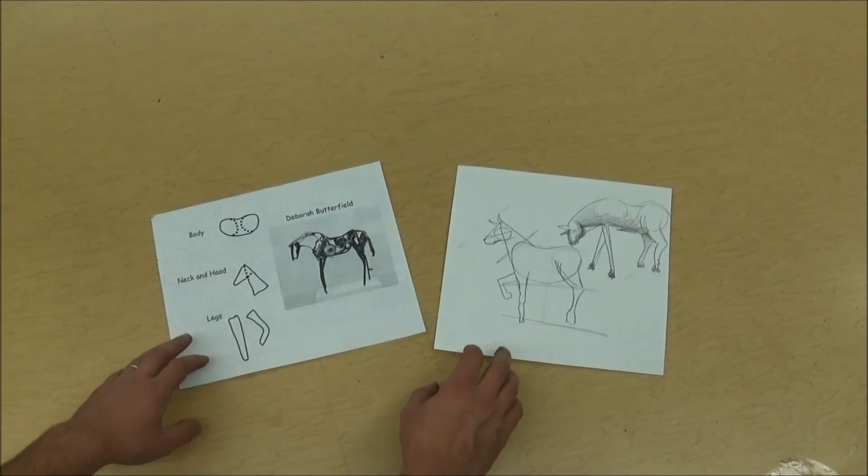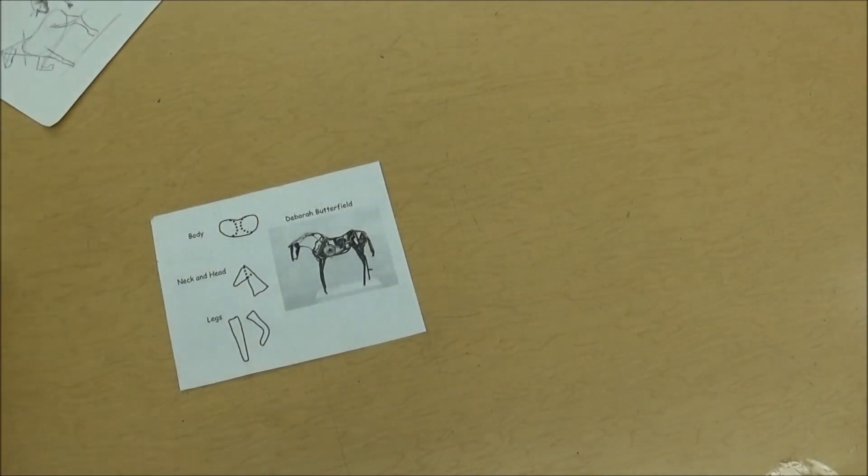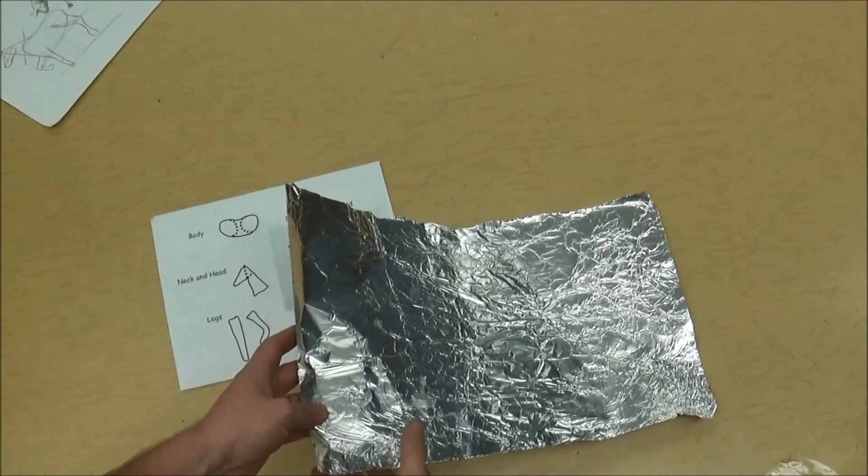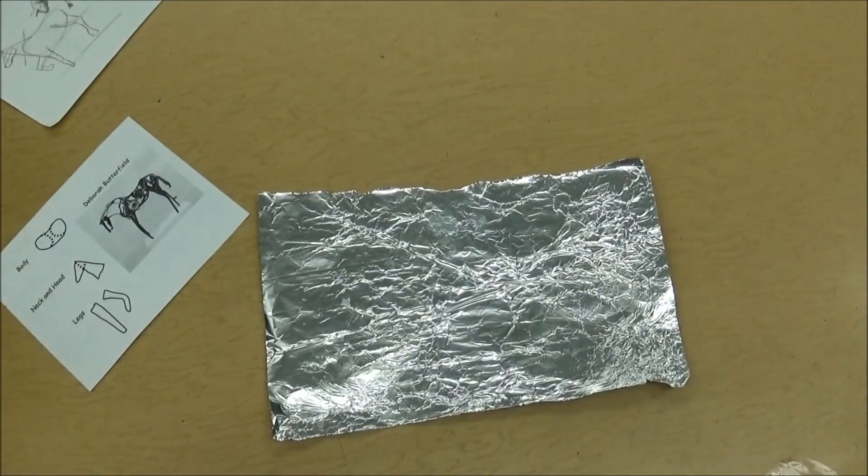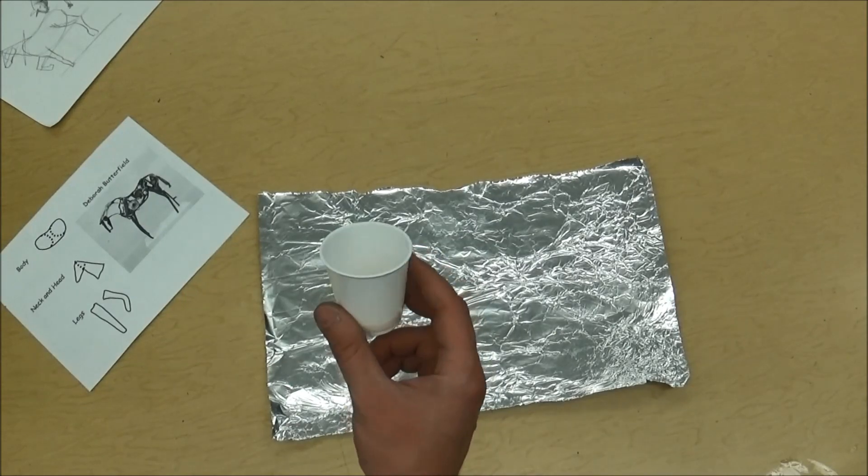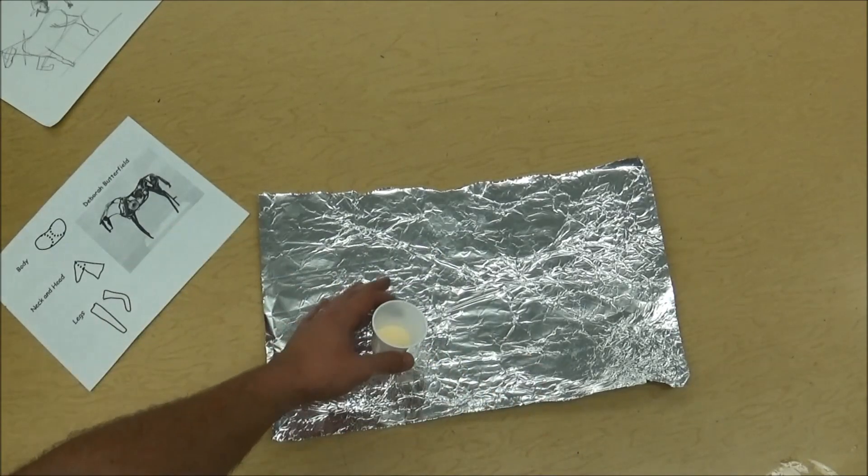So today just remember what you learned last time and you're going to need a piece of tin foil or aluminum foil. That's a placemat. We're going to use wood glue and wood glue is very strong. It sticks to wood, but it won't stick to aluminum. So that's why we're going to work on here.